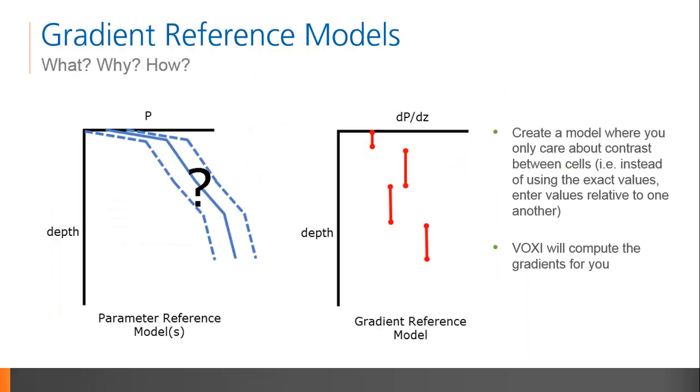There is another type of reference model that is useful when you don't have a sense of the actual rock property values, only their relative distribution. The gradient reference model can be used if, for example, you suspect a sharp contrast in density or susceptibility across a geological contact. There is always a gradient reference model specified, and the default model is perfectly smooth in X, Y, and Z directions.